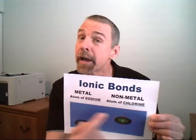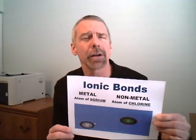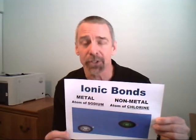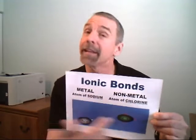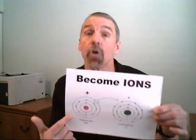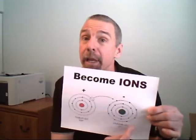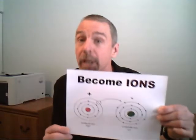First we'll start with ionic bonds. Metal and non-metal are involved. The metal gives over electrons, the non-metal receives. That would be called ions.